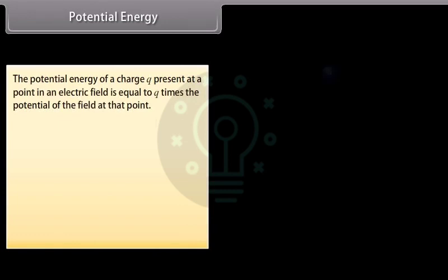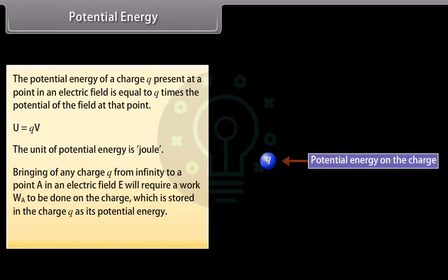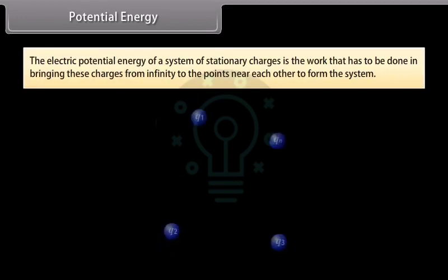Potential energy: The potential energy of a charge Q at a point in an electric field equals Q times the potential of the field at that point: U = QV. The unit of potential energy is joule. Bringing a charge Q from infinity to a point A requires work W_A, which is stored as the potential energy U_A = QV. The electric potential energy of a system of stationary charges is the work done in bringing them from infinity to their positions to form the system.